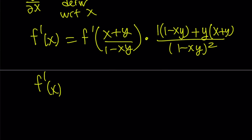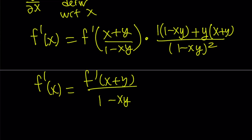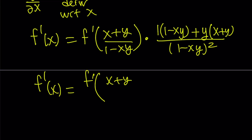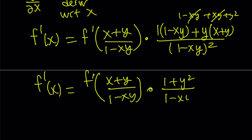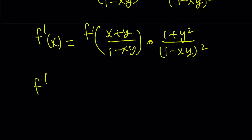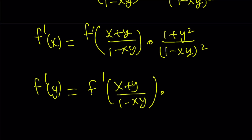Let's go ahead and simplify the right hand side. So that's f prime of the quotient, multiplied by the numerator. The numerator becomes one minus xy plus xy plus y squared, which simplifies to one plus y squared. And that is divided by one minus xy quantity squared. Similarly, taking the partial derivative with respect to y gives the same structure, but y is replaced with x — so it's one plus x squared in the numerator, with everything else the same.